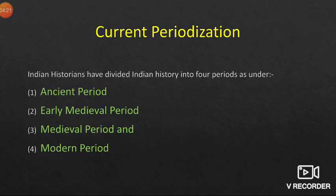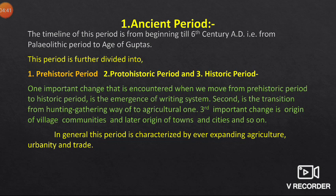Indian historians have divided Indian history into four main periods. The first period is the Ancient period, the second is called the Early Medieval period, the third is called the Medieval period, and the fourth is called the Modern period. We will study all these periods one by one — their timelines, features, how these divisions are done, and what separates one period from another.